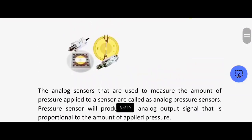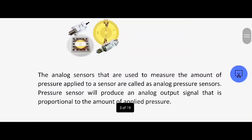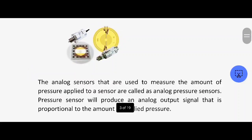Next one is the pressure sensor. The output signal is generated. These are analog sensors that are used to measure the amount of pressure applied to the sensor.